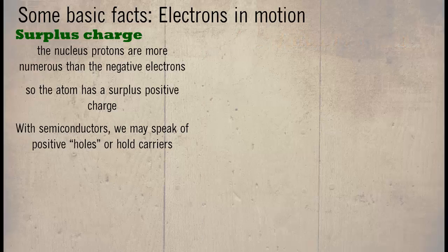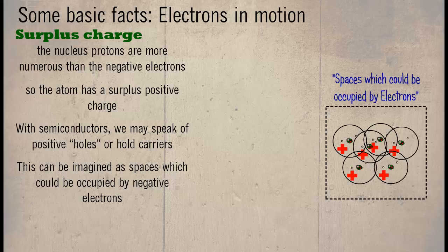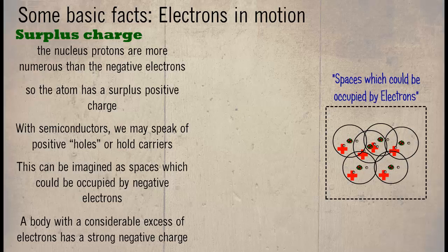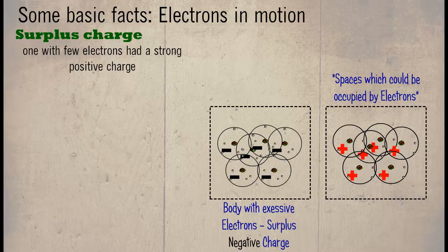With semiconductors, we may speak of positive holes or hole carriers. This can be imagined as spaces which could be occupied by negative electrons. A body with a considerable excess of electrons has a strong negative charge. One with fewer electrons has a strong positive charge.